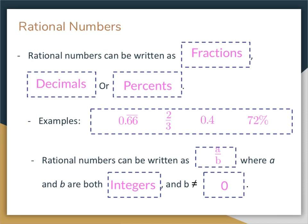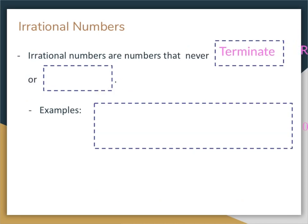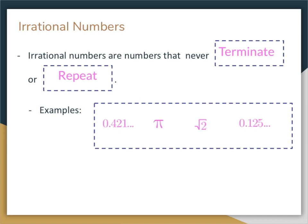Irrational numbers are numbers that can never terminate or never repeat. For example, 0.421... with dots going on forever — it's not repeating, so that's irrational. Pi is irrational: typing pi into a calculator gives 3.14... going on and on, never ending, never repeating. The square root of 2 gives 1.4... going on forever, never terminating. All square roots of non-perfect squares are going to be irrational numbers — for example, the square root of 10 or 11. A decimal like 0.125... going on forever and never repeating is also irrational.